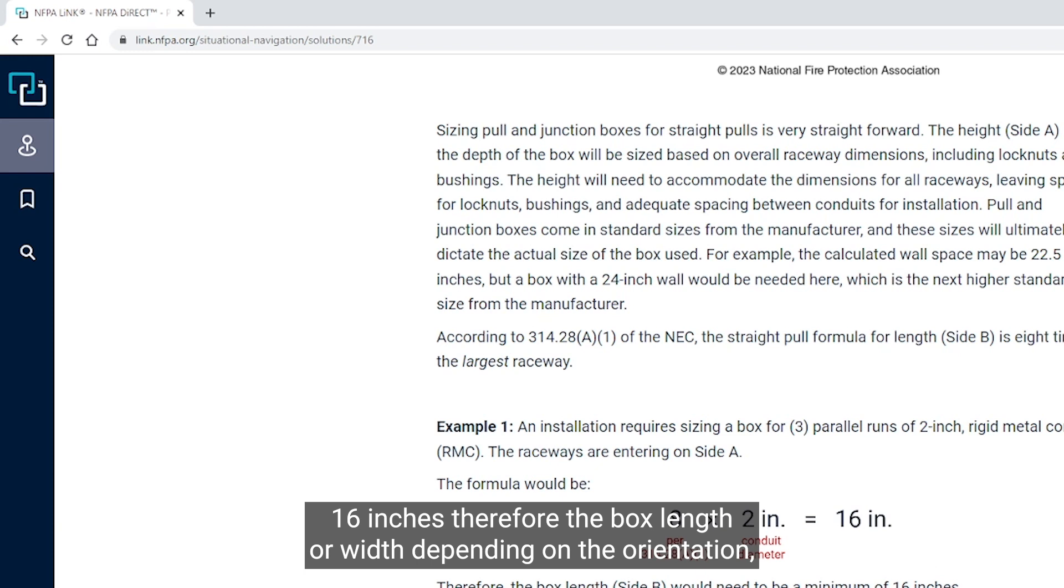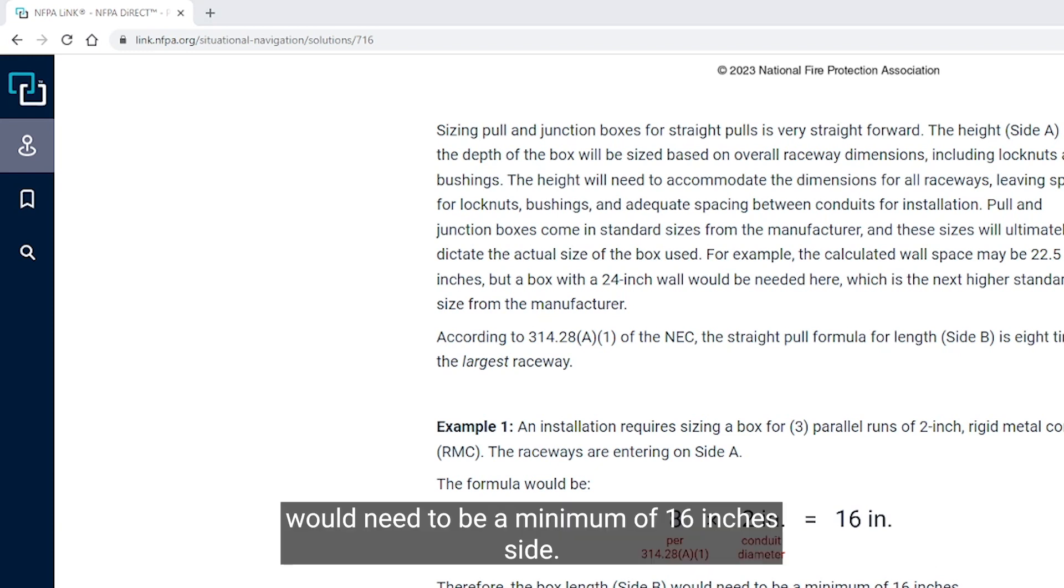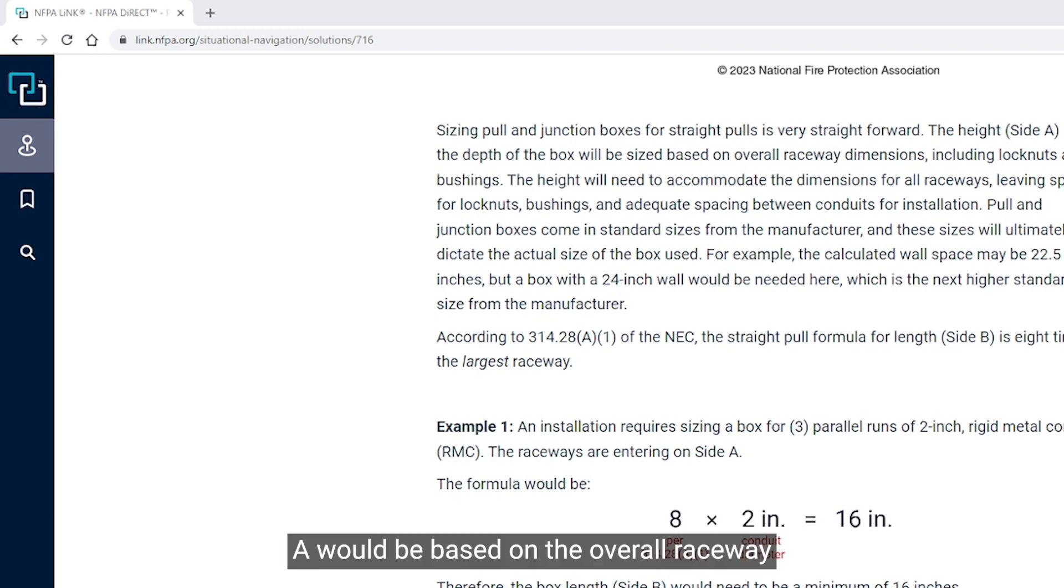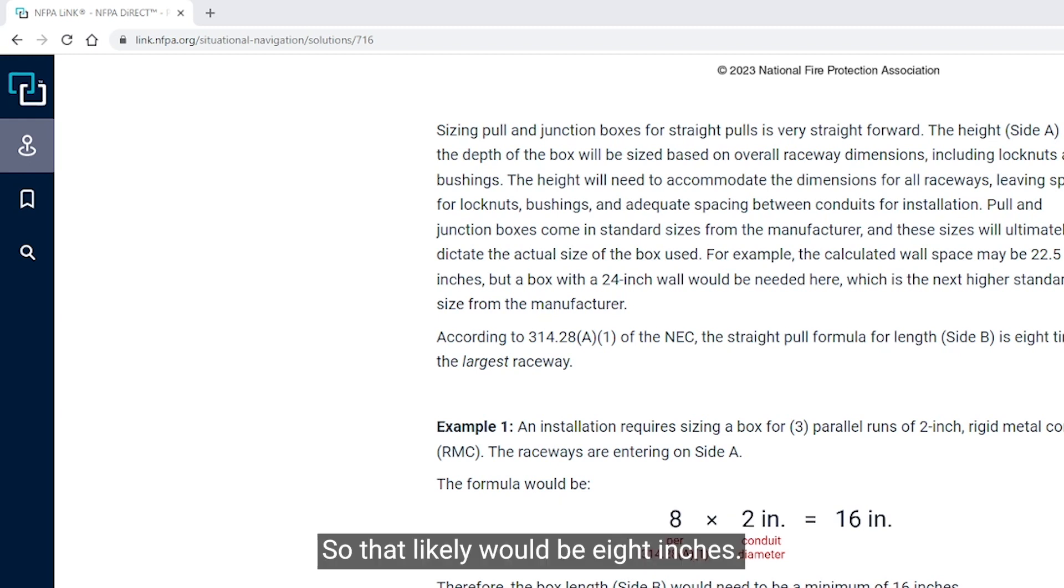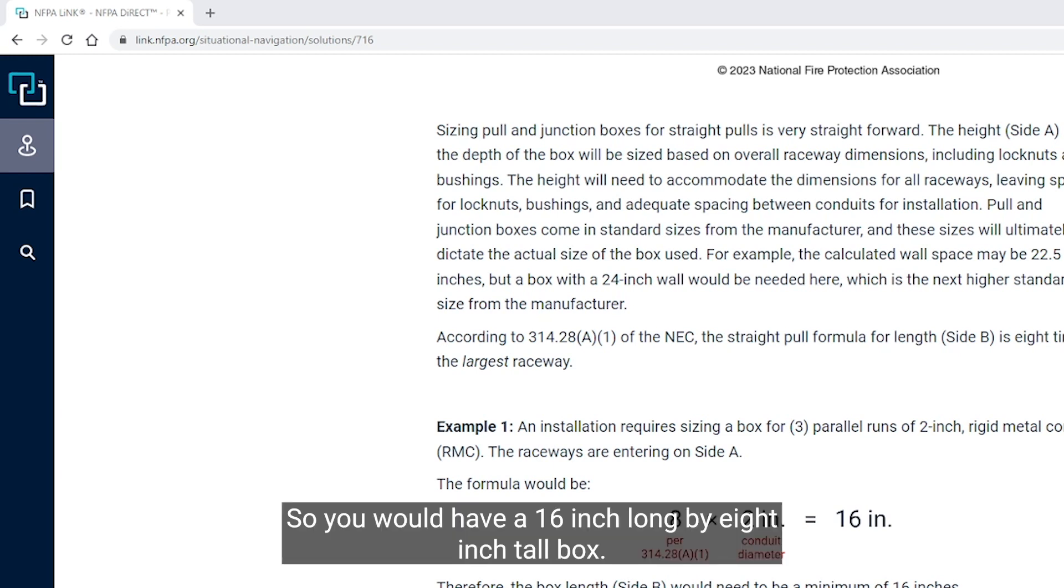So we're solving for B. We have three parallel runs of two-inch rigid metal conduit. The raceways are entering in on side A. So eight times two would equal 16 inches. Therefore, the box length or width, depending on the orientation, would need to be a minimum of 16 inches. Side A would be based on the overall raceway dimensions plus room for lock nuts and bushings, so that likely would be eight inches. You would have a 16-inch long by 8-inch tall box.